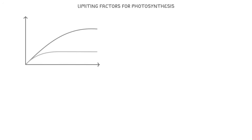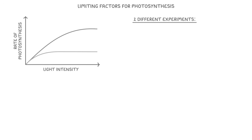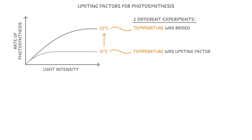You'll sometimes see more than one limiting factor shown within a single graph. For example, this graph has two curves representing two different experiments. Both show how light intensity affects photosynthesis, but one was done at 15 degrees Celsius and the other at 25 degrees Celsius. By comparing these two curves, we can see that temperature was the limiting factor in the 15-degree experiment, because when the temperature was raised to 25 degrees the maximum rate of photosynthesis was much higher.